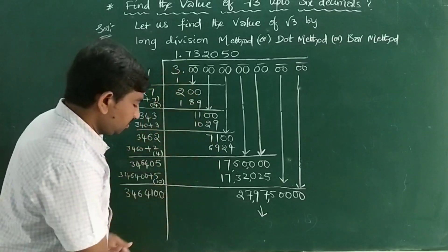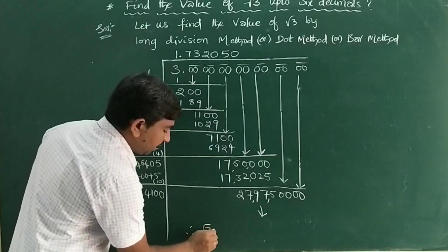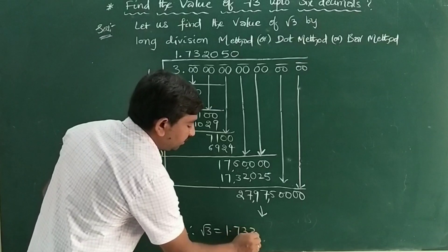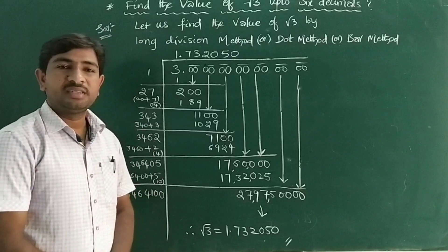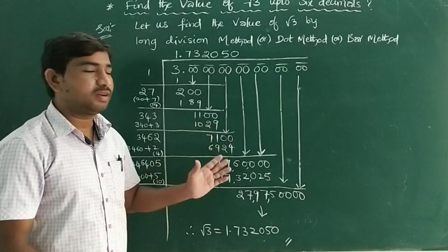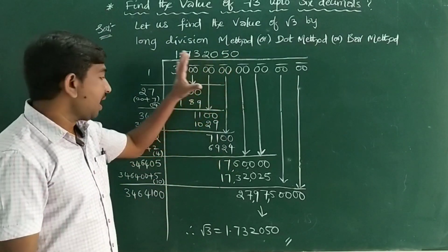So what is the √3 value? Therefore, √3 equals 1.732050, up to 6 decimal places. This is the value for √3 by the long division method.